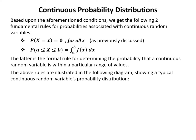Based on these conditions, we get two fundamental rules for continuous random variables. First, the probability that x equals any particular value is equal to zero for all x. Second, the probability that x is between any two values a and b is equal to the integral of the density function f(x) from a to b, written as the integral from a to b of f(x) dx.